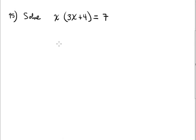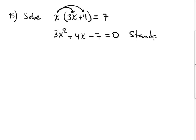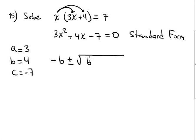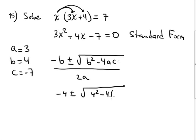Now solve this equation. It gives a quadratic equation, but it's not in standard form — you must write it in standard form first. Multiply to get: 3x squared plus 4x minus 7 equals 0. That is standard form. Let's solve it using the quadratic formula. A is 3, B is 4, and C is negative 7. Apply the formula: x equals negative B plus or minus square root of B squared minus 4AC, all over 2A.